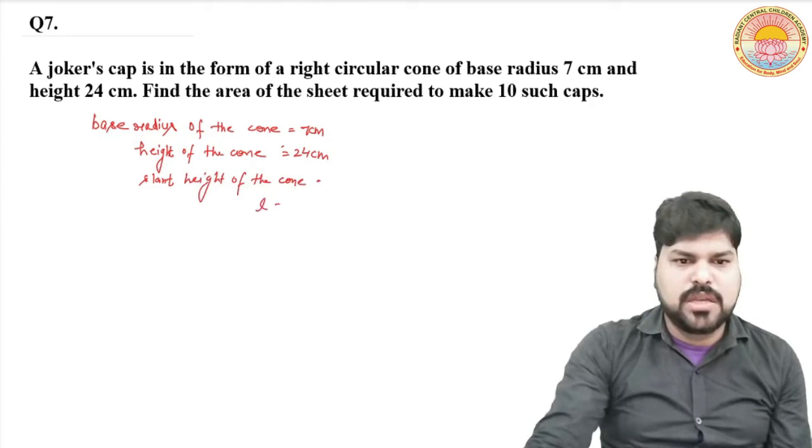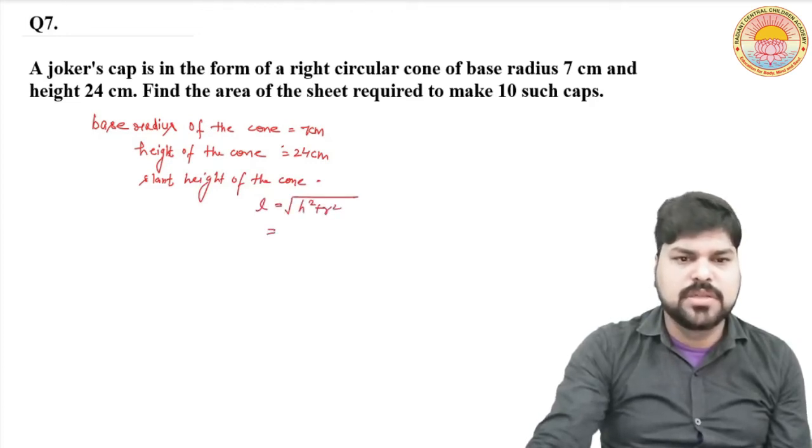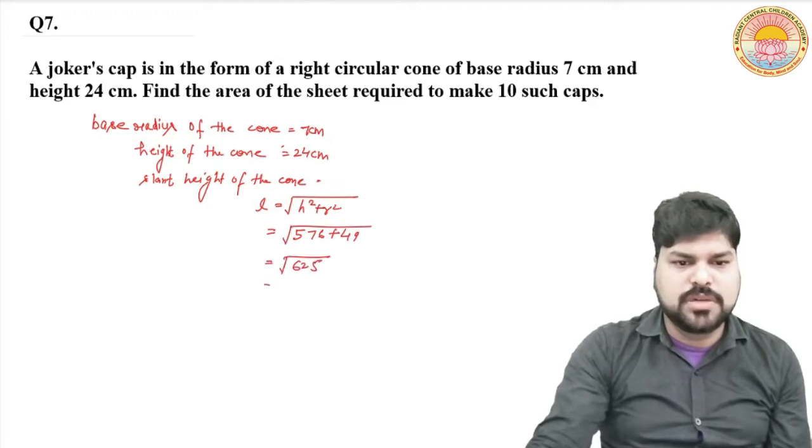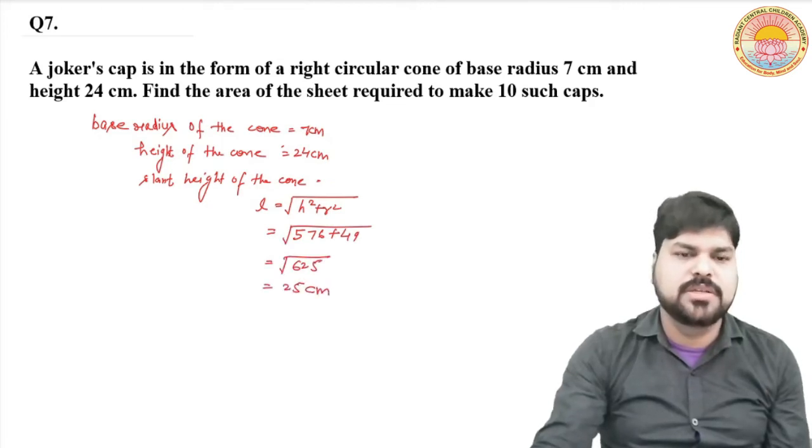Slant height of the cone, l is equal to square root of h square plus r square. That is square root of 24 square plus 7 square, which is square root of 576 plus 49, equal to square root 625. Slant height is 25 cm.